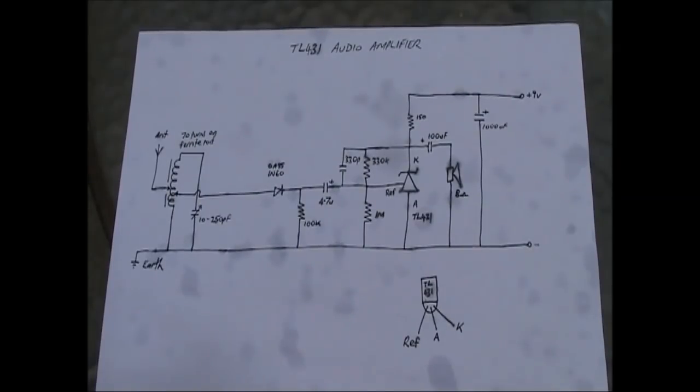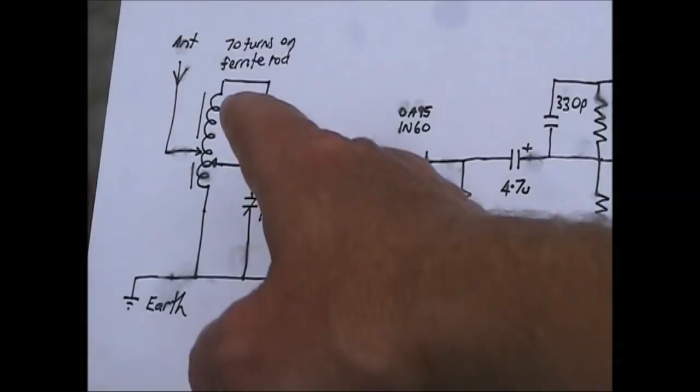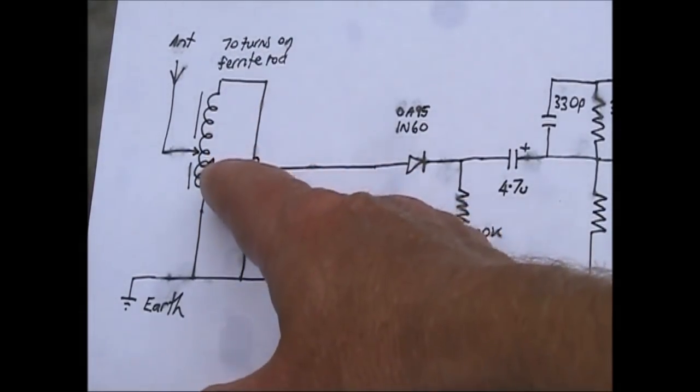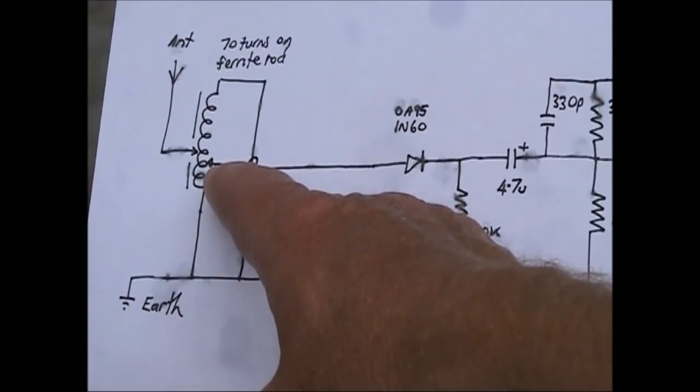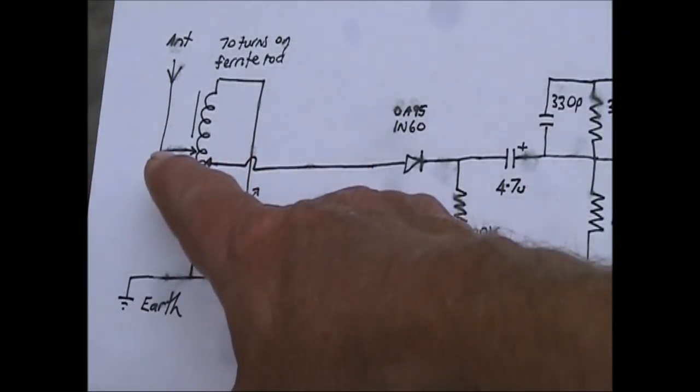Let's put that to the test. This is a conventional crystal set. 70 turns of wire on a ferrite rod. There are taps every 10 turns. And you can use alligator clips to select the best positions for the diode detector and the antenna.